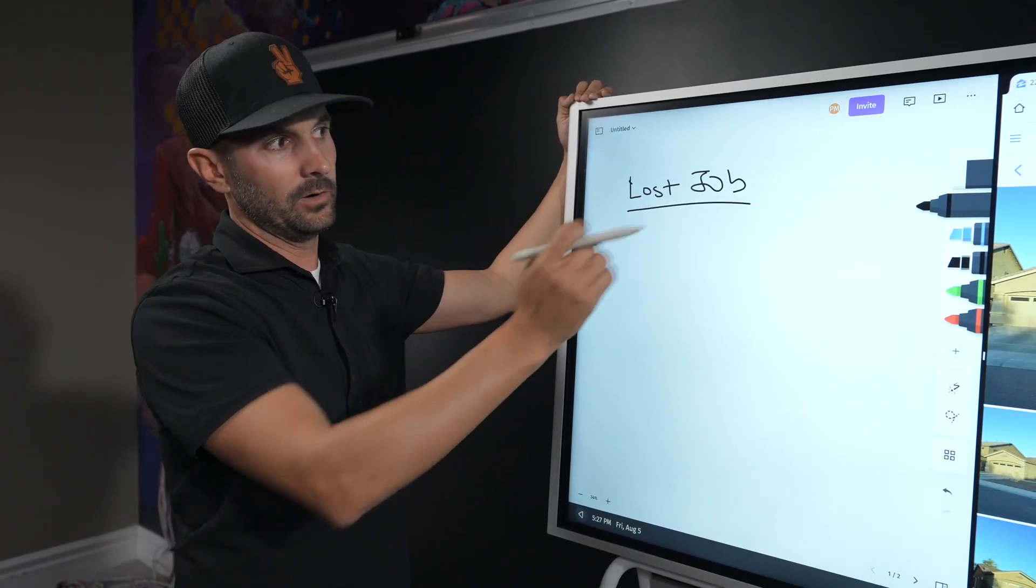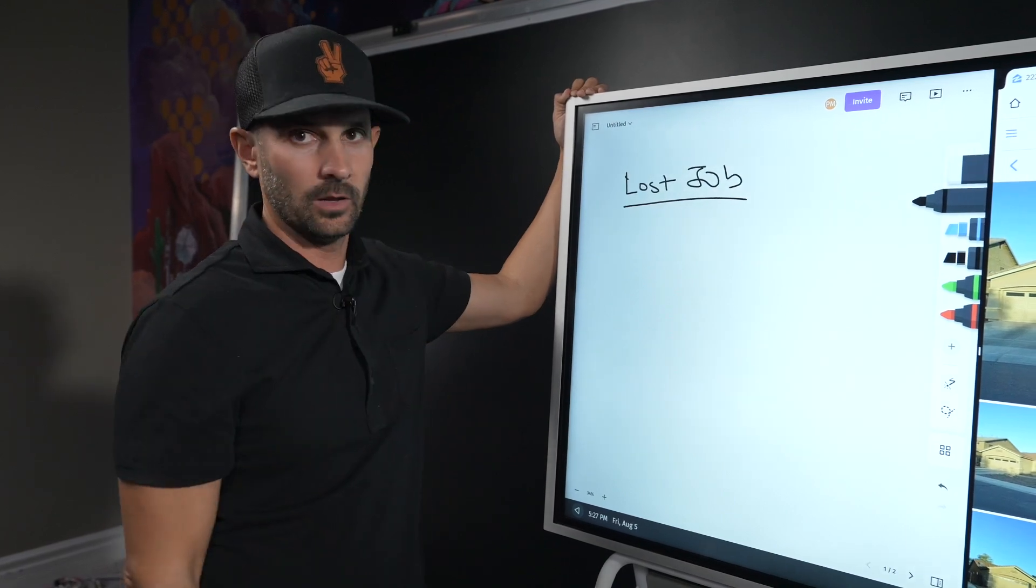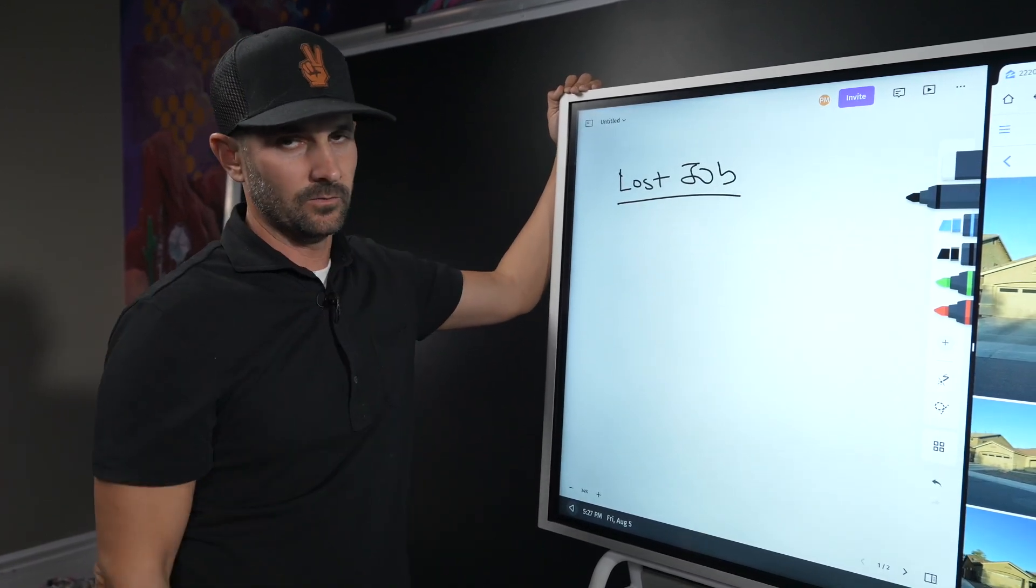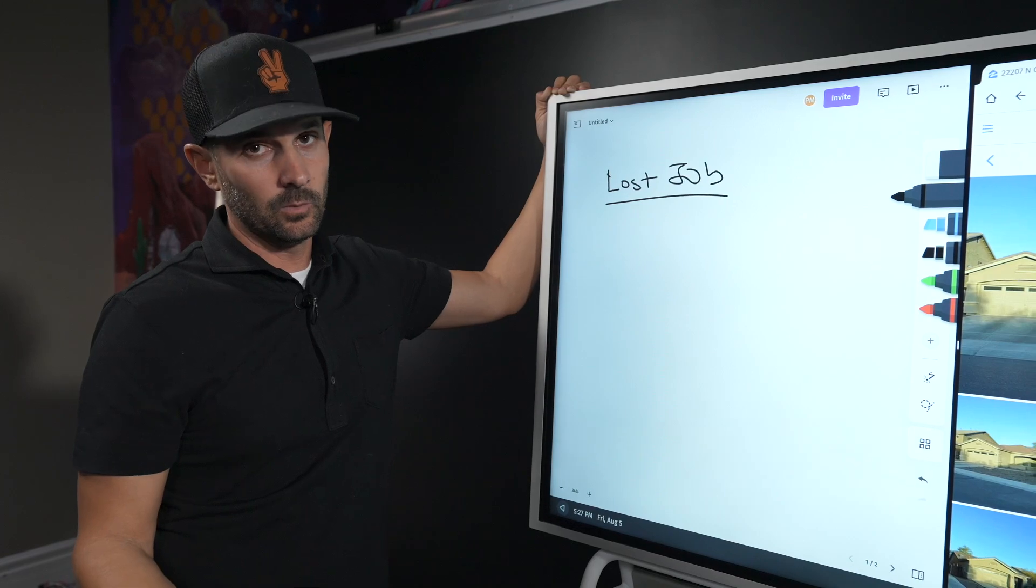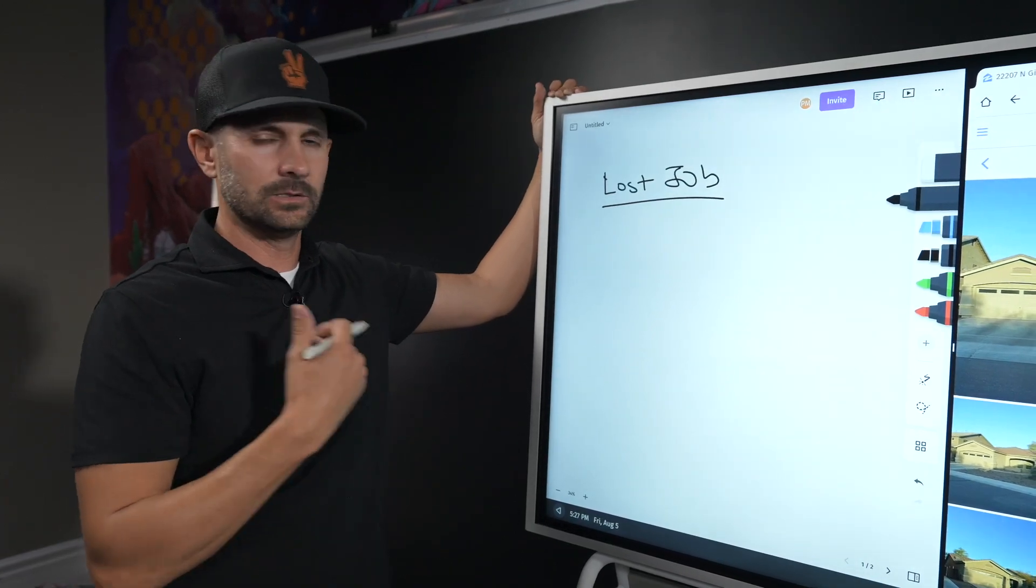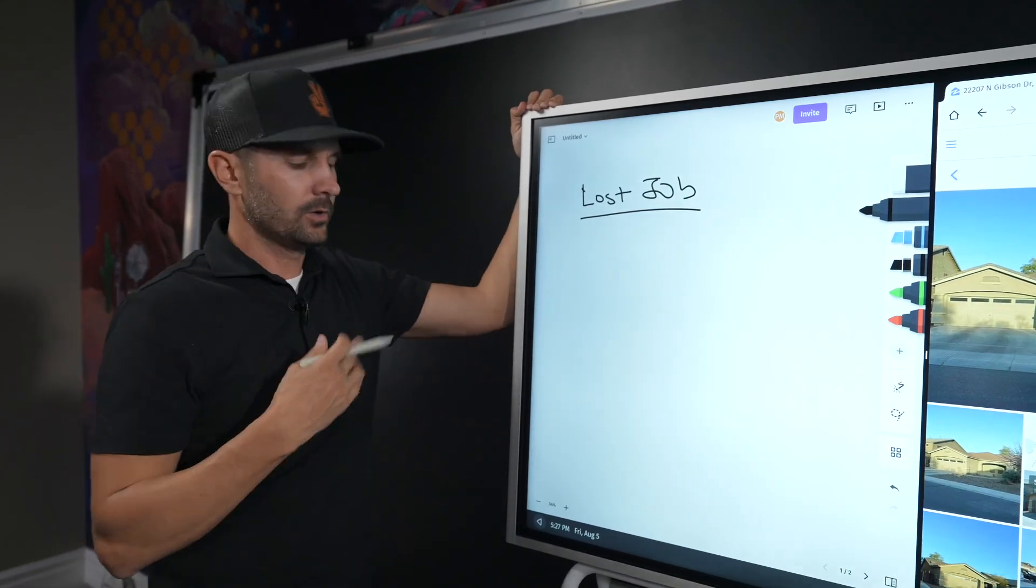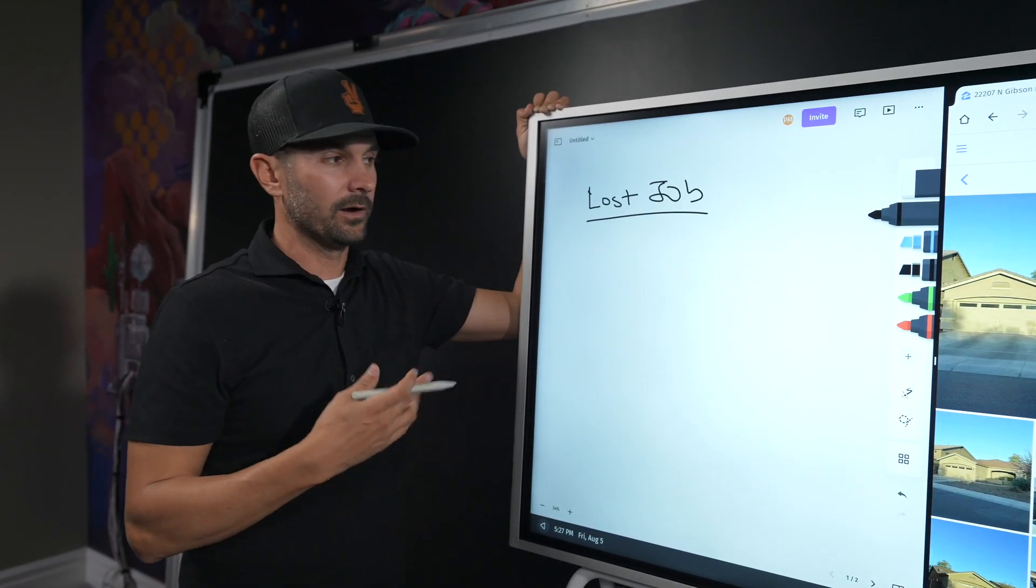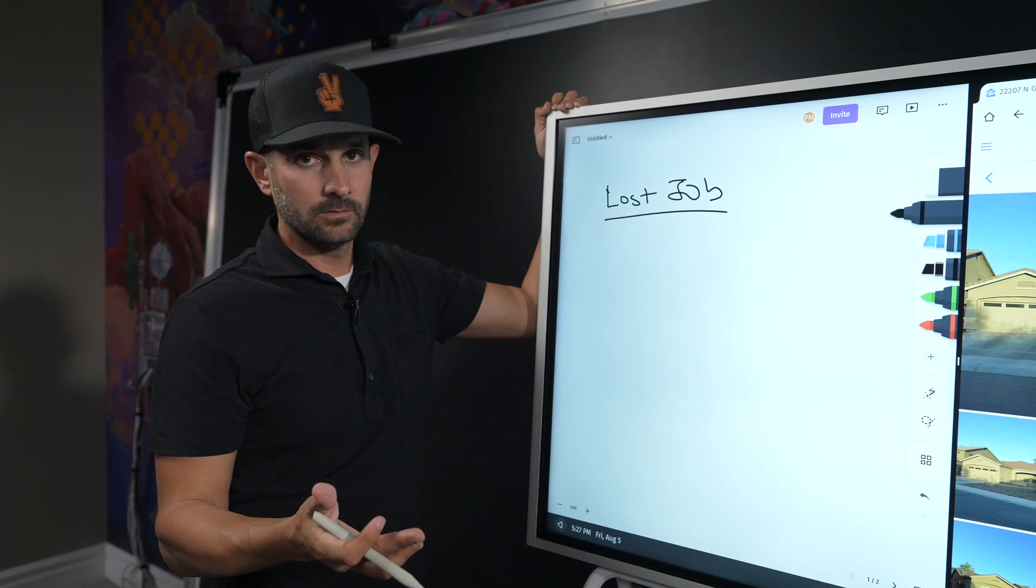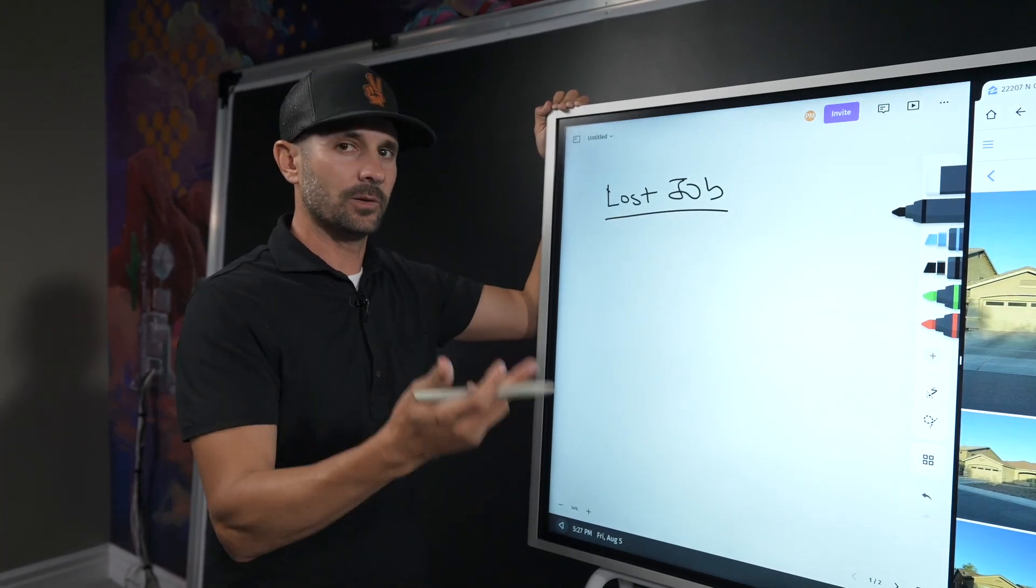He fell behind on his payments, which then put him into foreclosure. Foreclosure is public data so we can see that on websites. I can go right now on Zillow and say, Zillow, show me all the foreclosures. It's not a secret where you can find foreclosure data. Batchleads is just the best for us. This gentleman had lost his job. He was a trucker, couldn't afford his payment anymore.